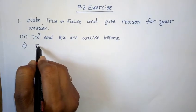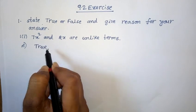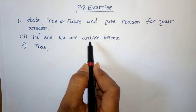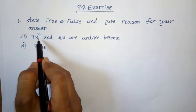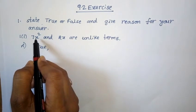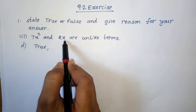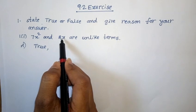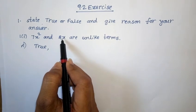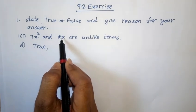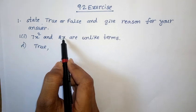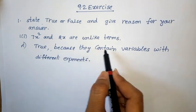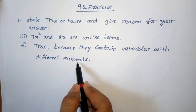The answer is true. They are saying 7x squared and 2x are unlike terms. Unlike terms means different variables. Observe x squared and x — the variables are x only, but the exponents are different. In unlike terms, the variable and the exponents both are different. Here the exponent values are different because they contain variables with different exponents.